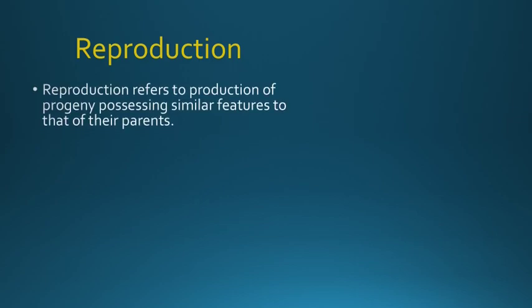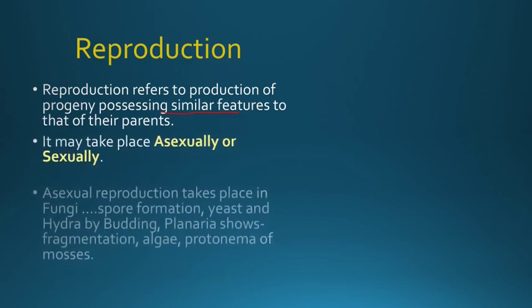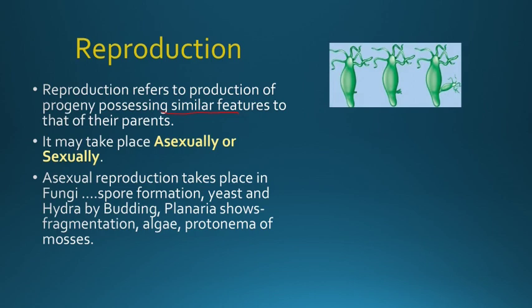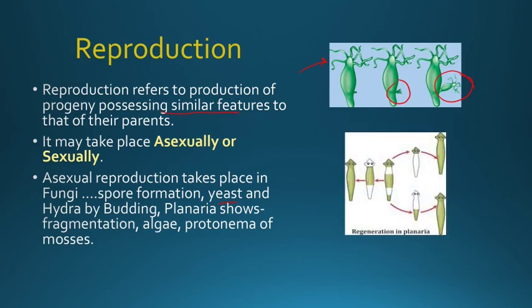Reproduction refers to procreation — production of new progeny which is exactly similar to its parents, identical to its parents. For example, the puppy is exactly similar to the dog, or kittens are exactly similar to the cats. It may take place by two methods: asexual reproduction or sexual reproduction. Asexual reproduction takes place in fungi by spore formation, in yeast by budding, and in hydra by budding as well. In planaria, it shows regeneration by fragmentation — each fragment is capable of developing into a new planaria. In algae and protonema of mosses, they also reproduce asexually.